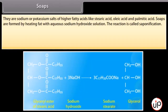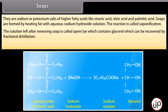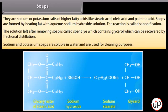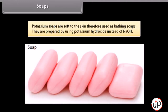Soaps. They are sodium or potassium salts of higher fatty acids like stearic acid, oleic acid and palmitic acid. Soaps are formed by heating fat with aqueous sodium hydroxide solution — the reaction is called saponification. The solution left after removing soap is called spent lye, which contains glycerol that can be recovered by fractional distillation. Sodium and potassium soaps are soluble in water and used for cleaning. Potassium soaps are soft to the skin and therefore used as bathing soaps; they are prepared using potassium hydroxide instead of NaOH.